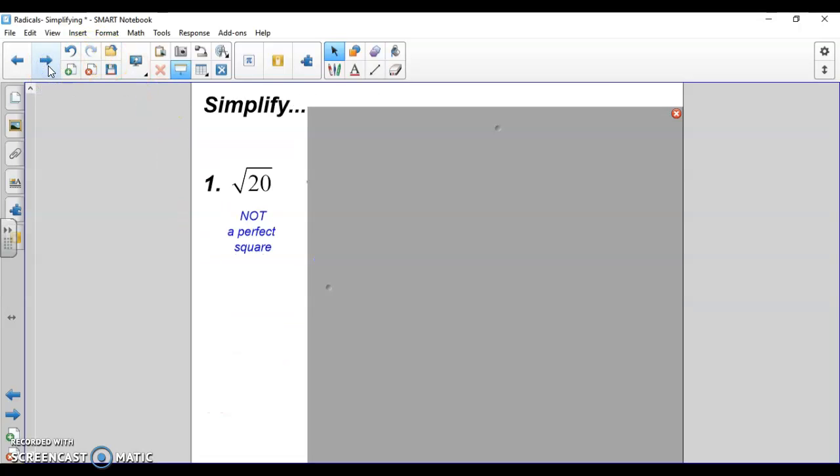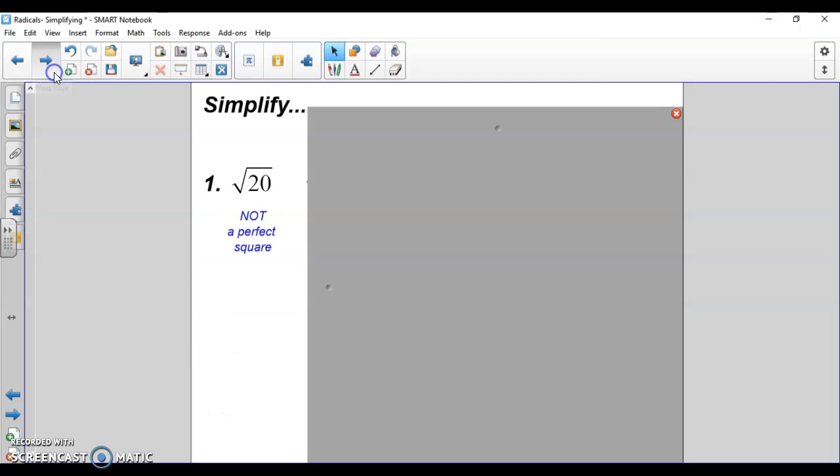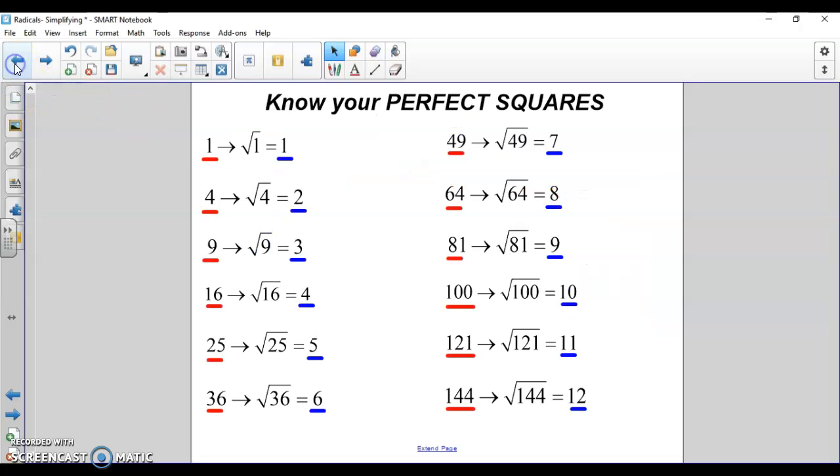Simplify square root of 20. 20 was not on that list - we had 16, we had 25. I want exact answers with radicals, not calculator decimals. We need to find the biggest factor of 20 that is a perfect square. Looking back at our list: 4 is a factor of 20, 9 is not, 16 is not. We can't go any bigger than that.